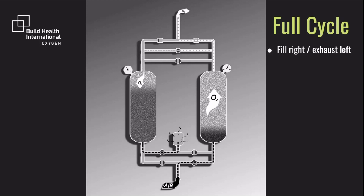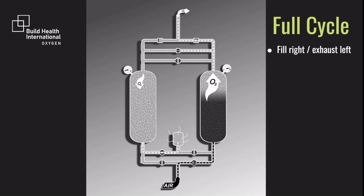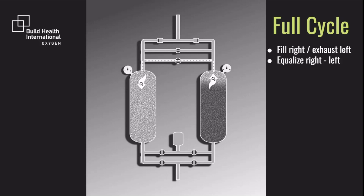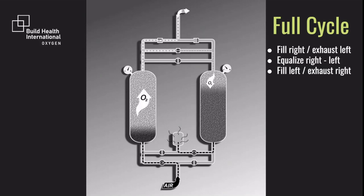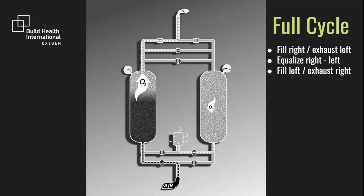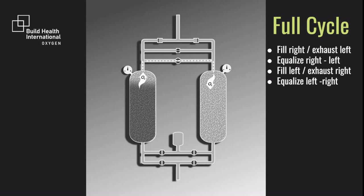Now, having seen all the parts of the PSA plant, let's go through a full cycle. We start just after equalization. The right-hand tank is producing oxygen and the left-hand tank is venting. Notice that the purge line is flowing, the right feed valve is open, and the left exhaust valve is open. The valves stay in this position until the right tank has saturated almost all of its zeolite. Notice that the left tank has been fully purged and is exhausting a little oxygen. Here we equalize both tanks, jumpstarting production on the left tank. The left tank is now producing oxygen and the right tank is venting absorbed nitrogen. Again, the purge line is flowing, the right feed valve is open, and the left exhaust valve is open. The valves stay in this position until the left tank has saturated almost all its zeolite. Notice that the right tank has been fully purged and is exhausting a little oxygen. Again, we equalize the tanks, helping to begin production on the right tank.